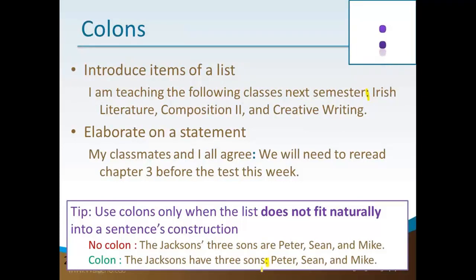You can also use a colon to elaborate on a statement. For example, 'My classmates and I all agree: we will need to reread chapter three before the test this week.' In this sentence, I'm elaborating — I'm explaining what my classmates and I agree on.